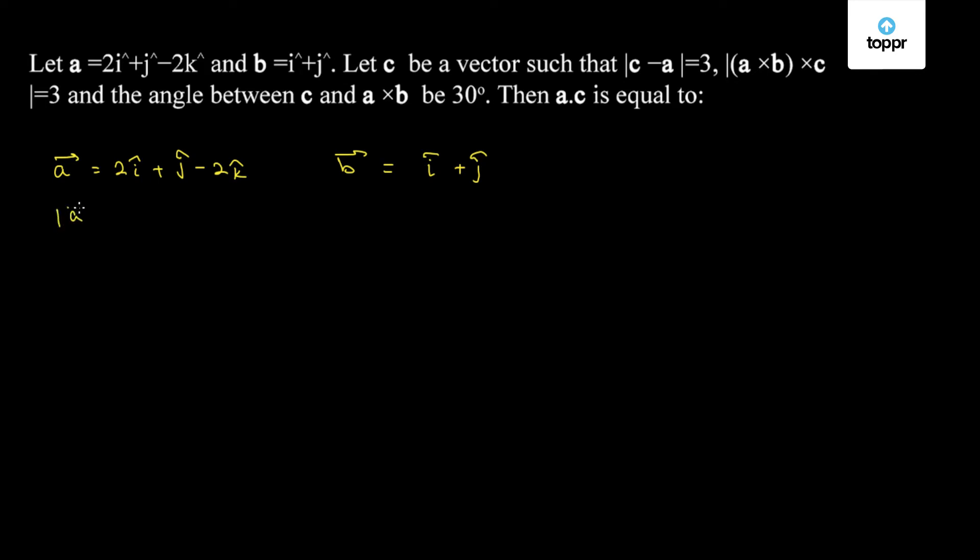Mod of a will be needed in the calculation of a dot c, so we will evaluate that. This will be equal to 2 square plus 1 square plus minus 2 square. This comes out to be 3 units.